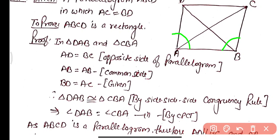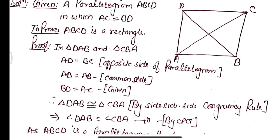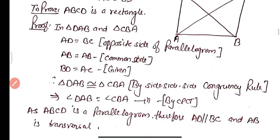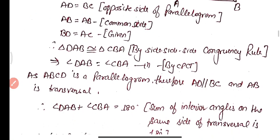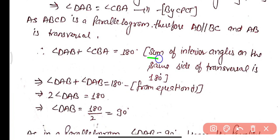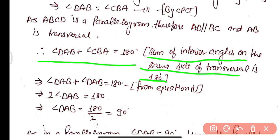Since the two triangles are congruent, angle DAB equals angle CBA. We also know ABCD is a parallelogram, so AD is parallel to BC with AB as transversal. Therefore angle DAB plus angle CBA equals 180 degrees, as these are a pair of co-interior angles on the same side of the transversal.